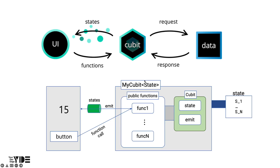Cubit is a class that can be extended to manage any type of state. To use it in an app, define the state and create a Cubit, then manage the state. We'll call it MyQubit here. When creating MyQubit, the type of state to be managed must be specified. MyQubit, which extends Cubit, provides a public function that can be called from the UI. When a function is called from the UI, a new state value is created in func1, and the value of the current state can be accessed through the state variable provided by Cubit.